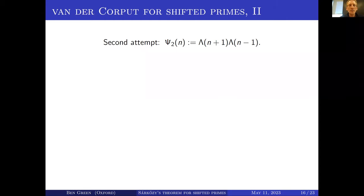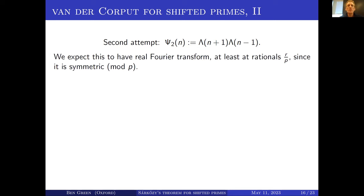What about a second attempt? This looks a bit strange at first sight: ψ₂(n) = λ(n+1) · λ(n−1), basically a characteristic function of numbers for which both n+1 and n−1 are primes. You do expect this to have a real Fourier transform at least at rational numbers, because it's symmetric modulo p.